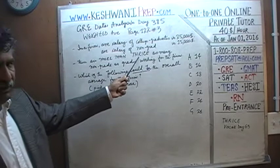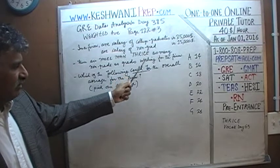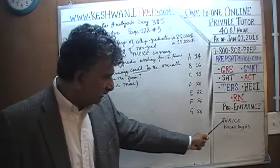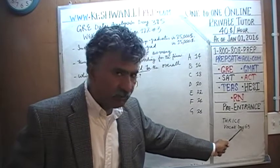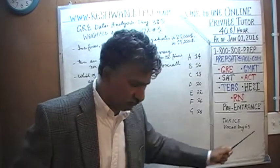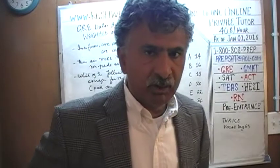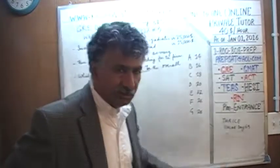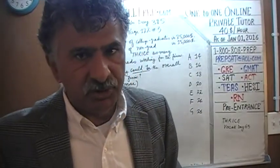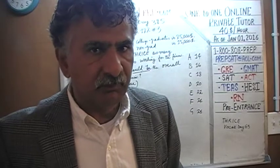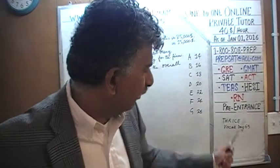What does thrice mean? Thrice means three times as many — twice and then thrice. We learned about thrice in our vocabulary videos on day number 63. If you are interested in improving your vocabulary, just type in GRE vocabulary words and day 63 will pop right up.